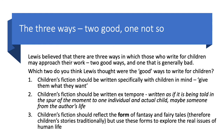So of these three, which two do you think Lewis thought were the good ways to approach writing for children, and which one do you think he felt was generally a bad way? One: children's fiction should be written specifically with children in mind — give them what they want. Two: children's fiction should be written extempore, as if being told in the spur of the moment to one individual, an actual child, maybe someone from the author's life. And three: children's fiction should reflect the form of fantasy and fairy tales but use these forms to explore the real issues of human life.